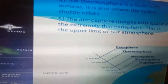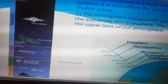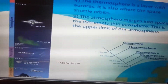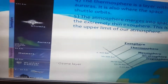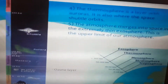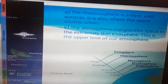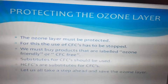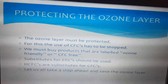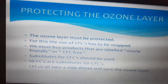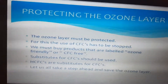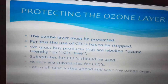So the five layers of the atmosphere are: troposphere, stratosphere, mesosphere, thermosphere, and exosphere. The ozone layer provides protection to our Earth. It is found in the stratosphere and shields us from harmful UV radiation coming from the sun.